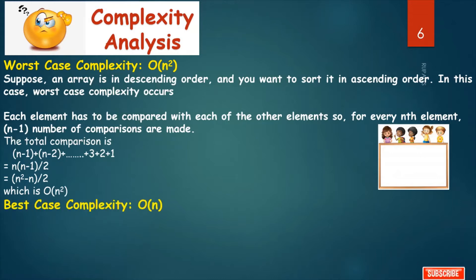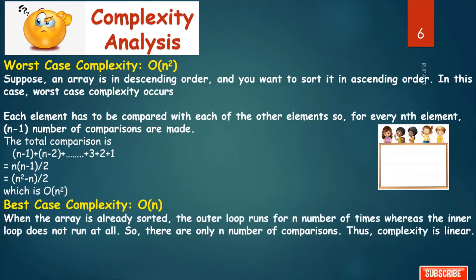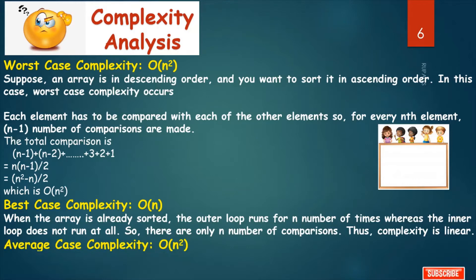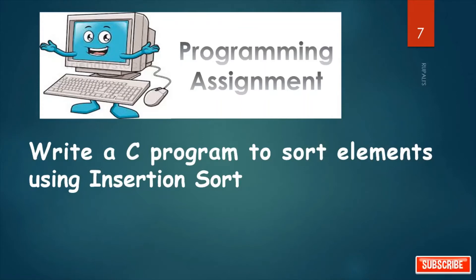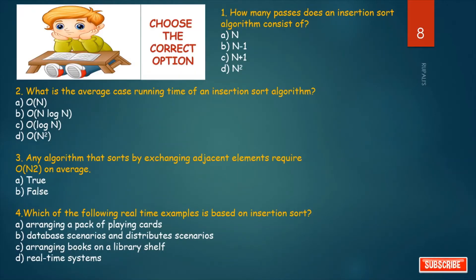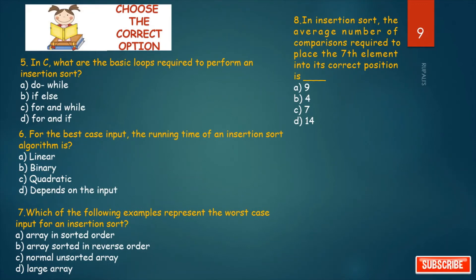For the best case complexity, it is O(n). When the array is already sorted, the outer loop runs n times but the inner loop does not run at all — there is precisely one comparison in the inner loop and no swap operations. So with n elements there are n-1 comparison operations, and the best case time complexity is O(n), meaning linear time. The average case is O(n²), occurring when elements are in jumbled order — neither ascending nor descending.